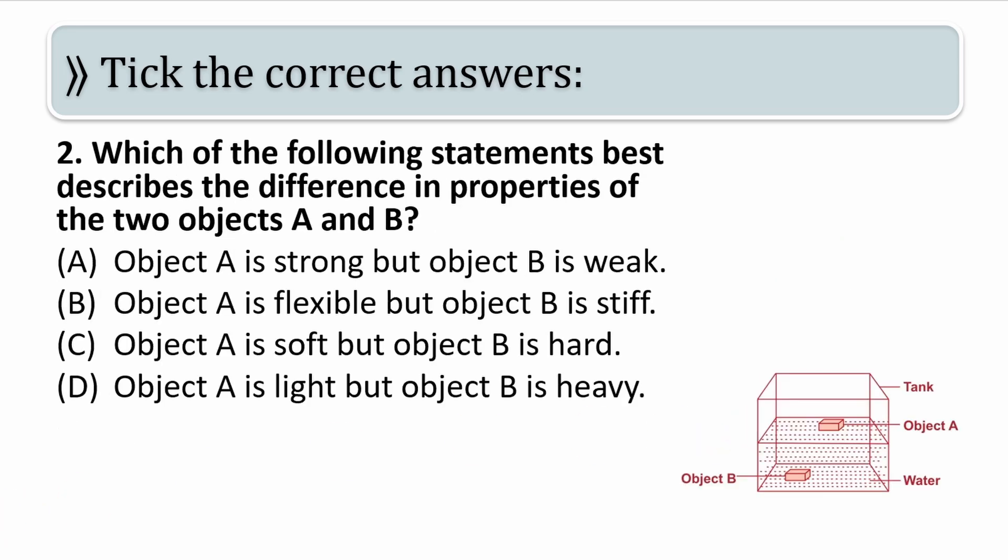Let us move on to the second question. Which of the following statements best describes the difference in properties of the two objects A and B? Option A: Object A is strong but object B is weak. B: Object A is flexible but object B is stiff. C: Object A is soft but object B is hard. D: Object A is light but object B is heavy.